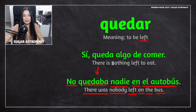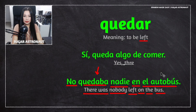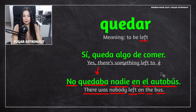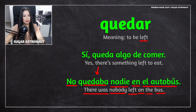The intonation changes, and we add 'sí,' which means 'yes.' So 'Sí, queda algo de comer' means 'Yes, there's something left to eat.' That's the positive form, and again we're using 'queda.' Excellent.